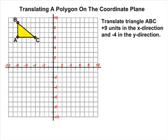In this specific example, they want us to translate triangle ABC positive 9 units in the x direction and negative 4 units in the y direction. Simply put, we have to slide this triangle 9 units to the right and 4 units down.